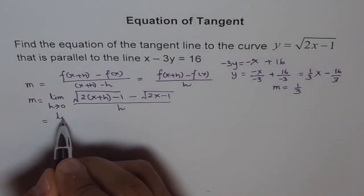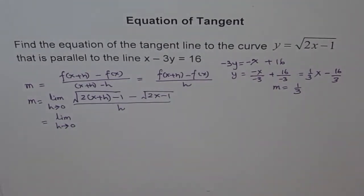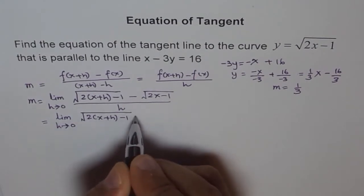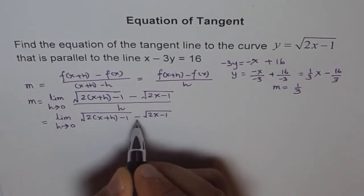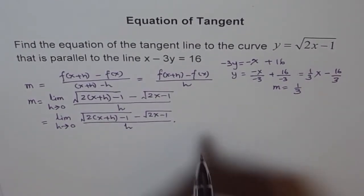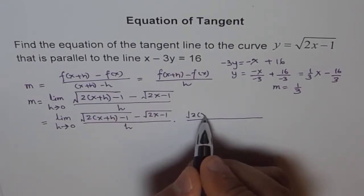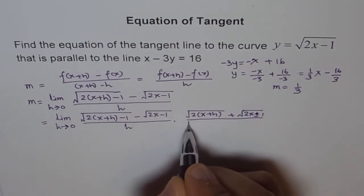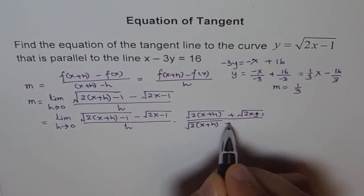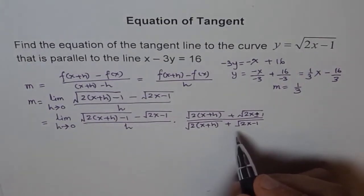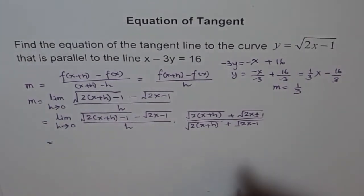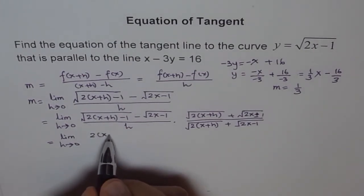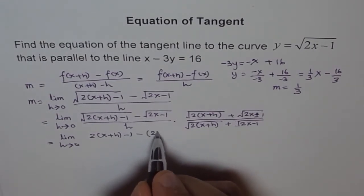To simplify, since we have square roots, it is a good idea to rationalize. The expression becomes: square root of 2(x plus h) minus 1, minus square root of 2x minus 1, multiplied by the conjugate — square root of 2(x plus h) minus 1 plus square root of 2x minus 1 — over h times that conjugate. This gives us a difference of squares in the numerator.